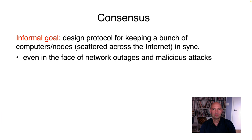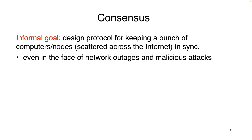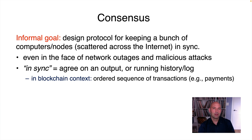The title of the talk is Permissionless Consensus. What do I mean by each of those two words? Let's start by talking about consensus — I'll still be pretty informal and high-level on this. Informally, the goal in consensus is you just want to keep a bunch of machines — scattered all over the globe and connected by the internet — in sync. And you want to do this even in the face of two types of challenges: number one, network failures and outages, and number two, malicious attacks.